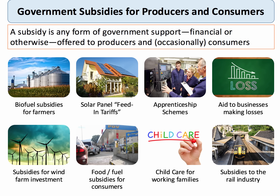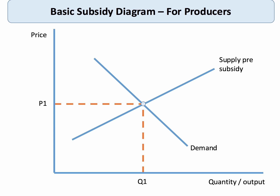There are lots of examples of subsidies in the news. For example, the government offered a substantial biofuel subsidy for farmers and generous solar panel feed-in tariffs for consumers. The government could subsidize apprenticeship schemes, offer import subsidies, aid businesses making a loss — such as in the steel industry — subsidize wind farm investments, food and fuel subsidies in developing countries, childcare incentives for working families, and the UK railway industry.